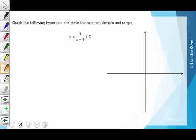In this example we're going to graph the hyperbola y equals 1 divided by x minus 4 plus 5, and we're also going to state its maximum domain and range. Because the hyperbola is already in this form, we don't need to make any adjustments to see how this function has been transformed.